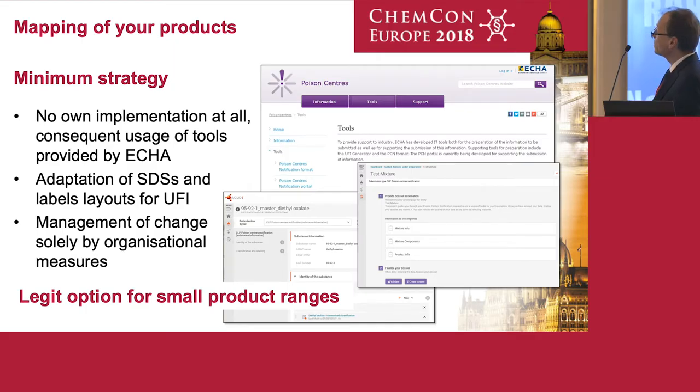Usually we have a dedicated master data system which stores data not subject to frequent changes — for example, EHS data. You will need to implement a new kind of composition in your EHS system; otherwise you will not be able to maintain the mixture-in-mixture component or provisions like the generic product identifier. The requirements regarding acceptable concentrations differ from existing schemes like classification, so you have to implement an algorithm to derive the new poison center notification composition from existing composition information and transform them into acceptable concentration ranges.